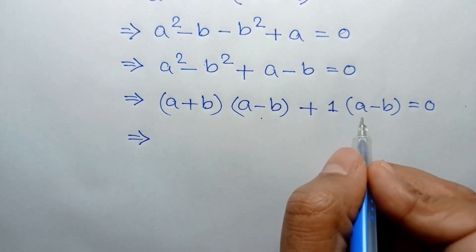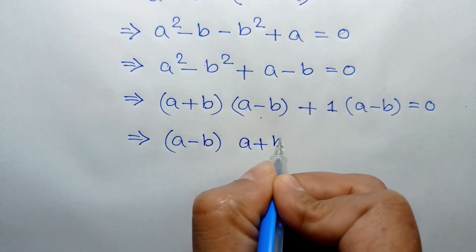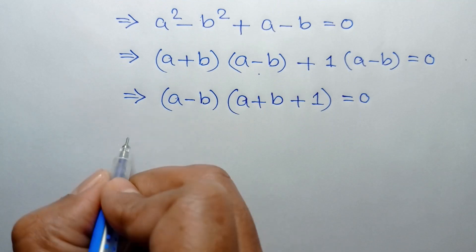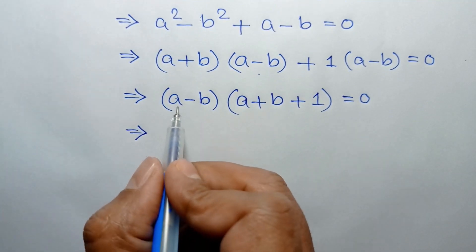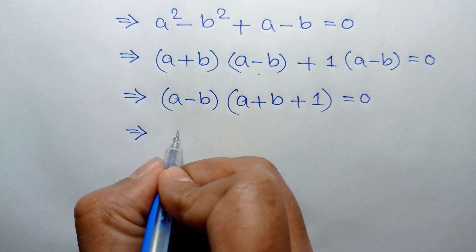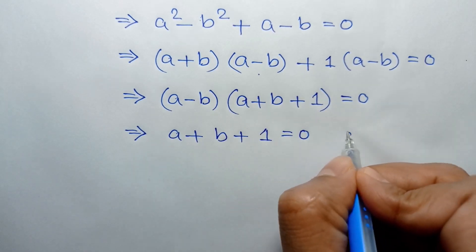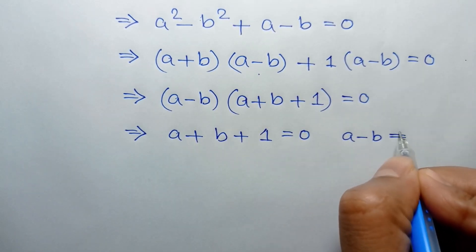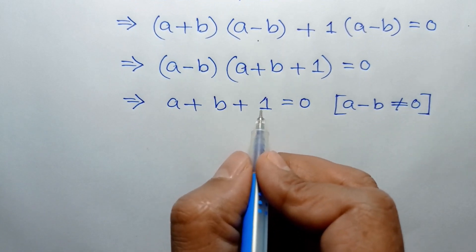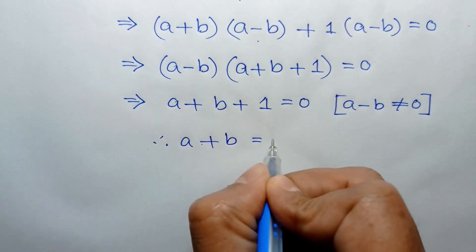Taking A minus B as common, we have A minus B times A plus B plus 1 is equal to 0. Since A minus B is not equal to 0, we must have A plus B plus 1 equal to 0, which gives us A plus B is equal to negative 1.